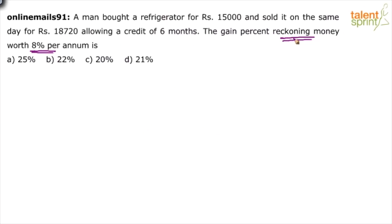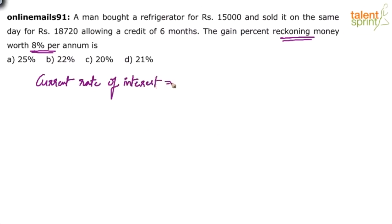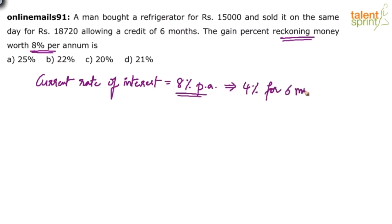You have to consider this a simple interest case — don't get confused, it is simple interest. The current rate of interest is eight percent per annum. If it is eight percent per annum, it will be four percent for a half year — four percent for six months.